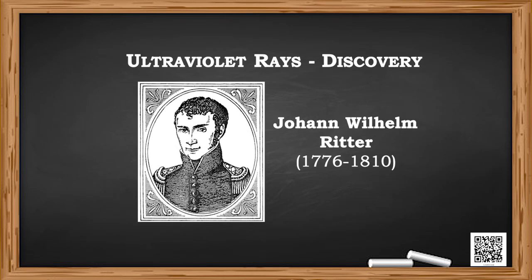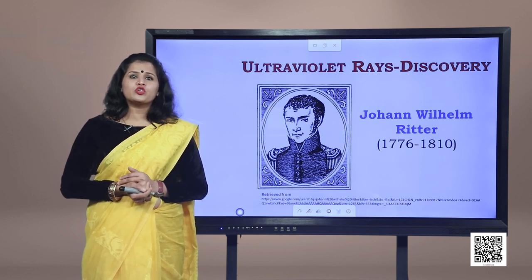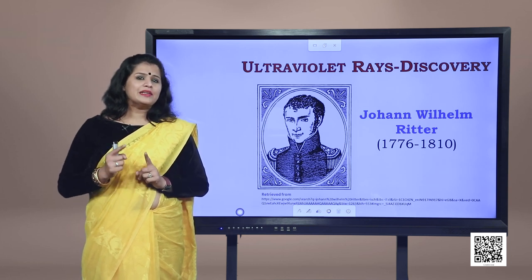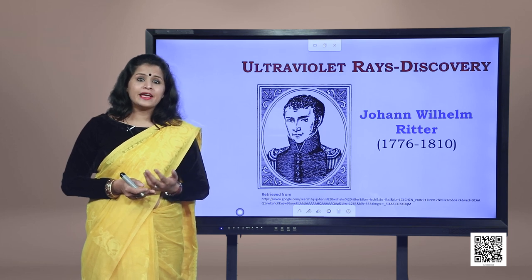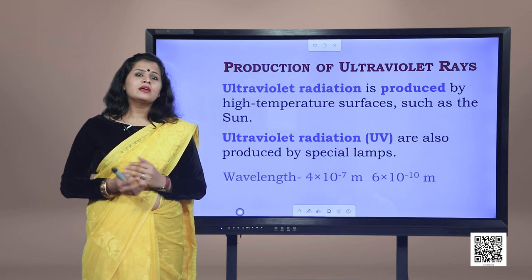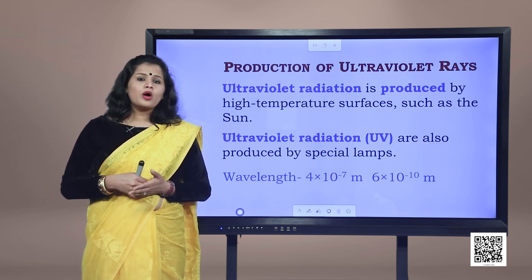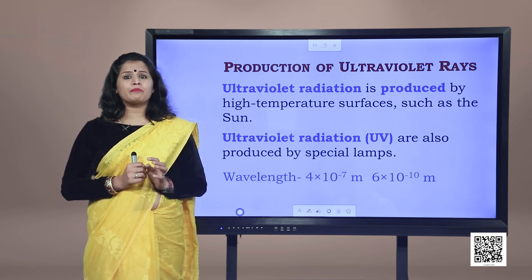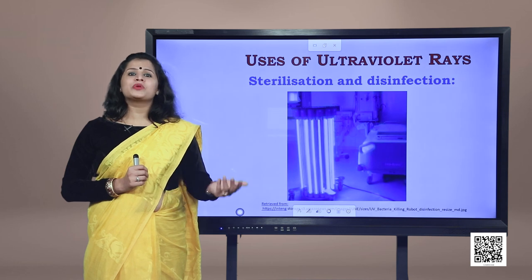Ultraviolet rays were discovered by Johann Wilhelm Ritter in 1801 when he noticed that invisible light beyond the optical region of the electromagnetic spectrum darkened silver chloride. Ultraviolet radiation used to be called 'chemical rays' because UV could make certain substances change chemically. Many insects are able to see ultraviolet radiations. UV radiation is produced by high-temperature surfaces such as the Sun in a continuous spectrum, and by atomic excitation in a gaseous discharge tube, as well as by special UV lamps. UV radiation is undetectable by the human eye.